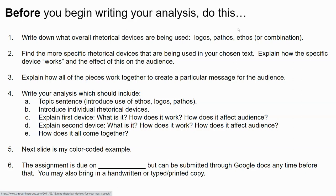You're going to write down — or type up in your notes — what overall rhetorical devices are being used. Once you decide whether it's logos, pathos, or ethos, you're going to come up with specific rhetorical devices. You're going to write an analysis that explains how all these pieces work together to create a message for the audience. Number four on this slide gives you what your writing is going to consist of: a topic sentence introducing what your text uses, an introduction to the individual rhetorical devices, an explanation of the first device, an explanation of the second, and a concluding sentence. The due date is the end of this week.